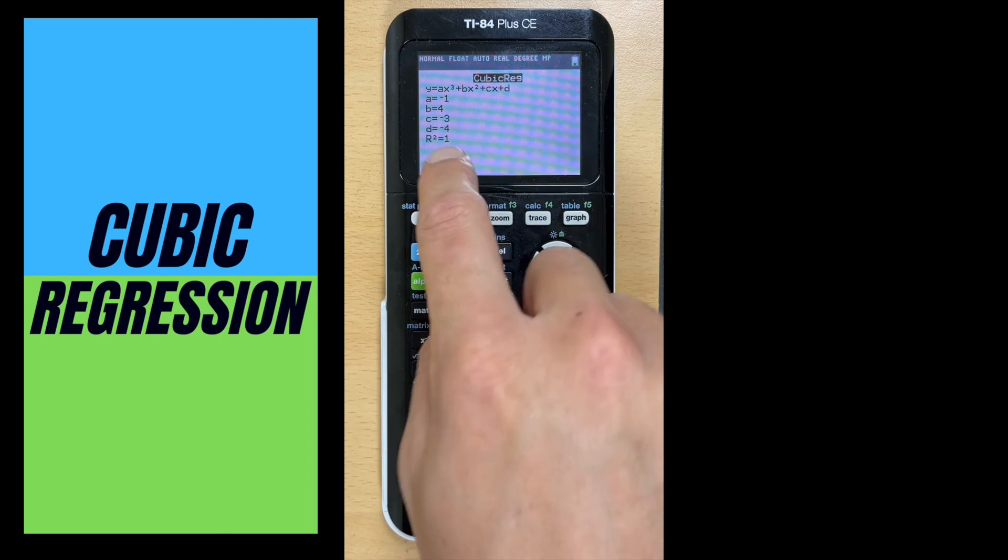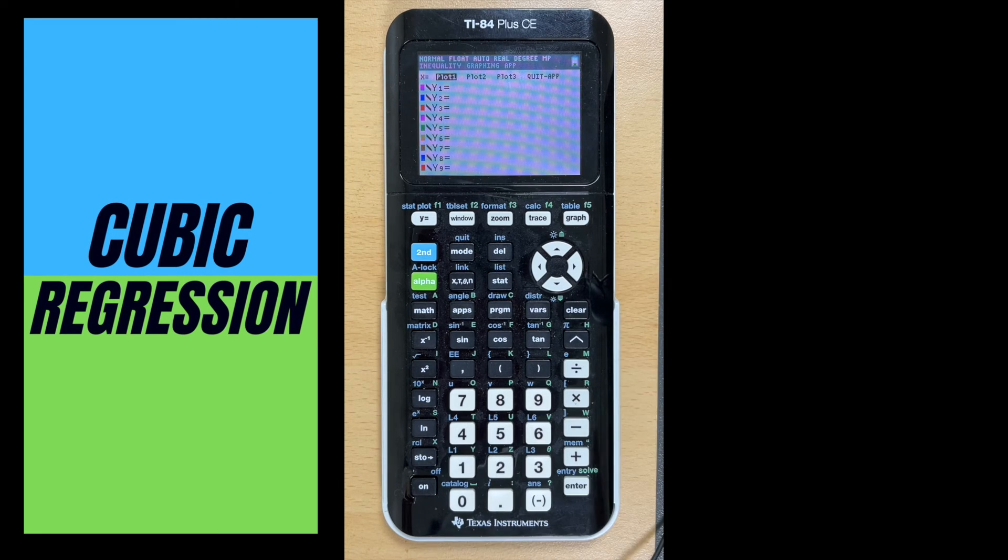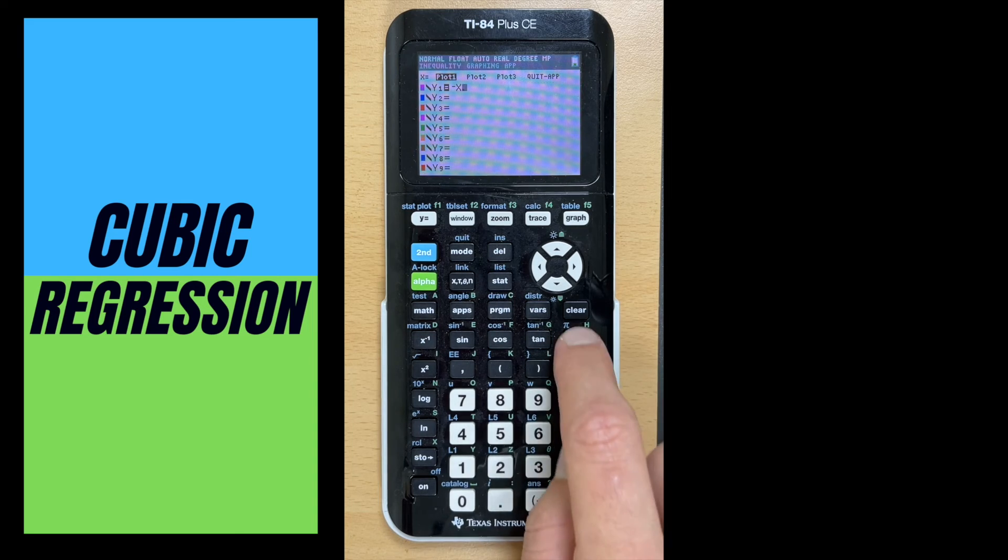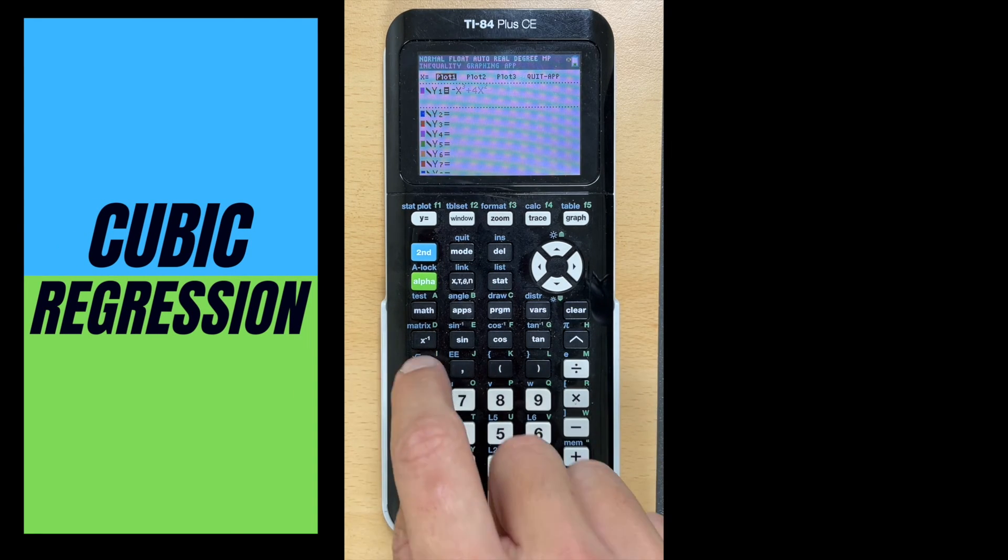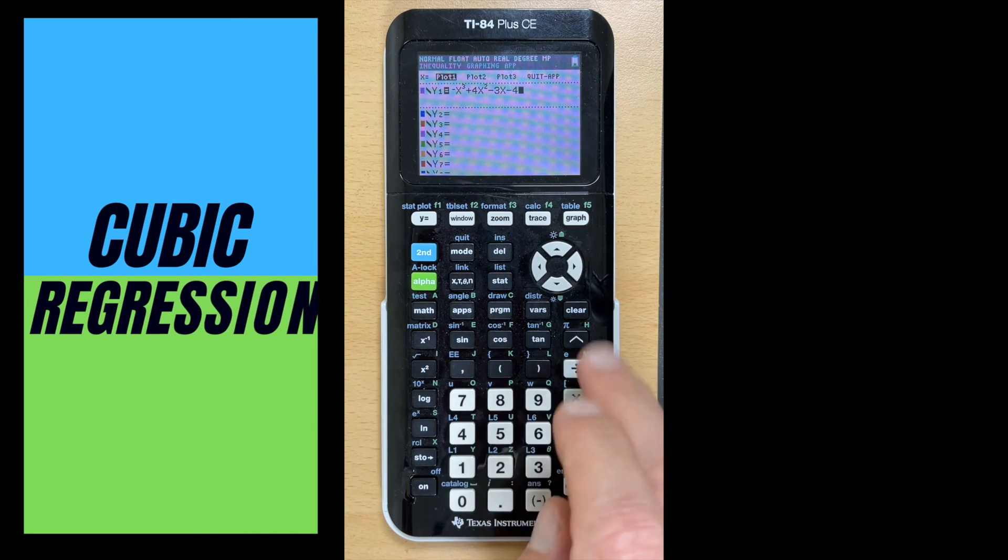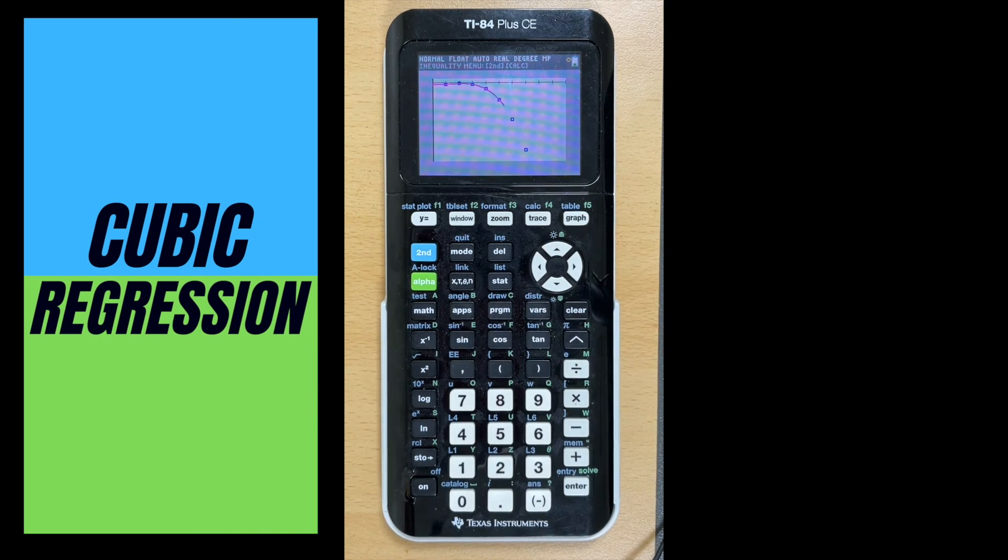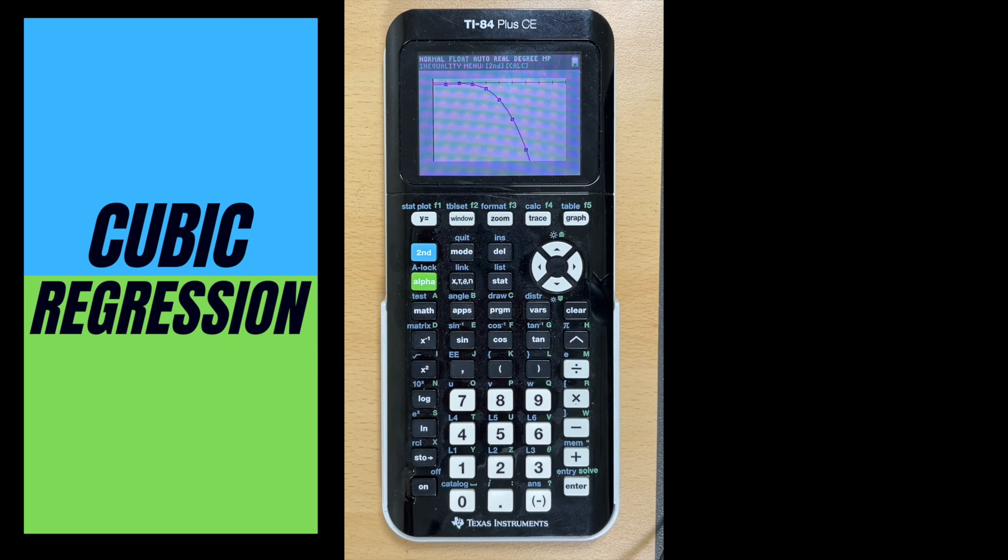Now what we can do is we can use this equation, go back to y equals, and we can actually graph it so that we can see it with our scatterplot. That was a negative x cubed plus 4x squared minus 3x minus 4. Now we hit graph and we watch the magic happen. And it goes right through those points. That's how we can use the cubic regression feature on the TI-84 Plus CE graphing calculator.